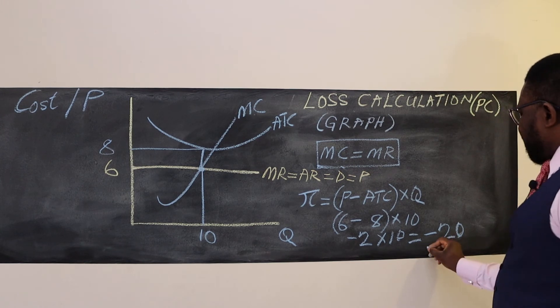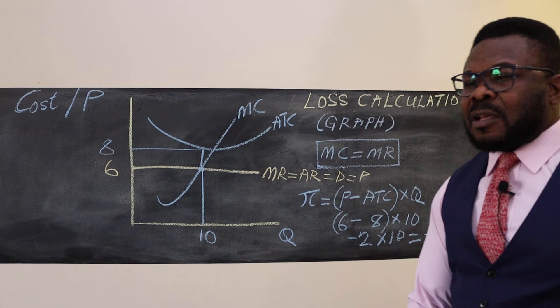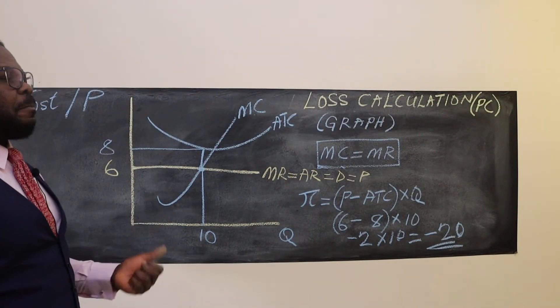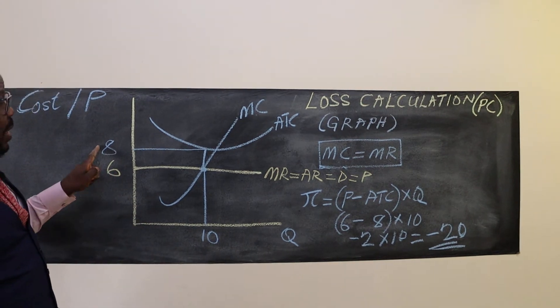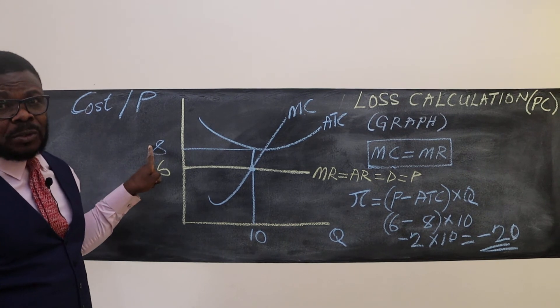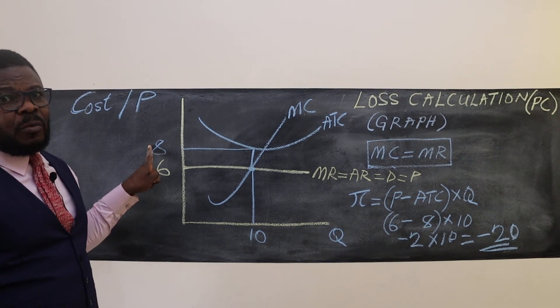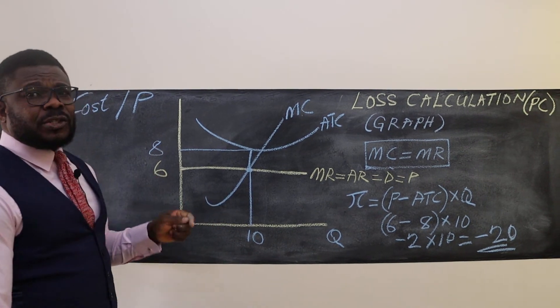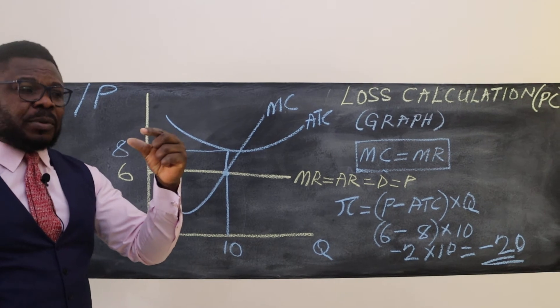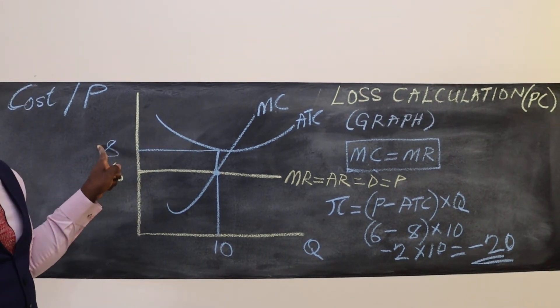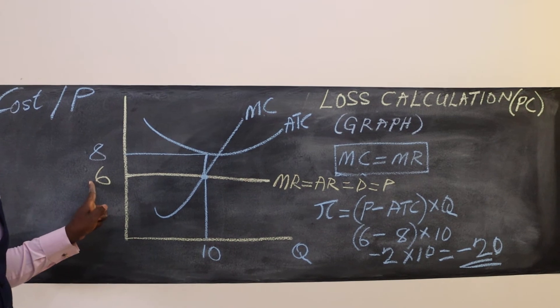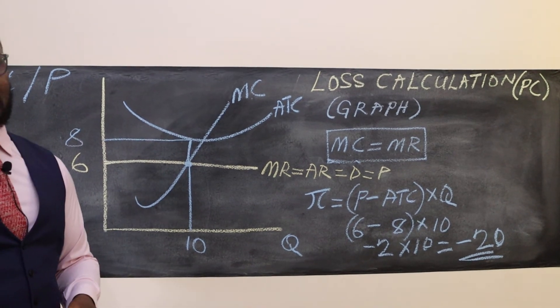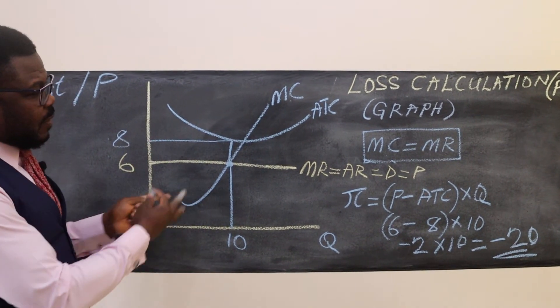So there's a loss of twenty. What is the logic behind this? This firm is operating at a very high average total cost. When they divide their total cost by the quantity they're selling, the average is too high. If it's a bottle of water, for example, they spend eight dollars on the bottle of water and sell it for only six dollars. That's the logic.